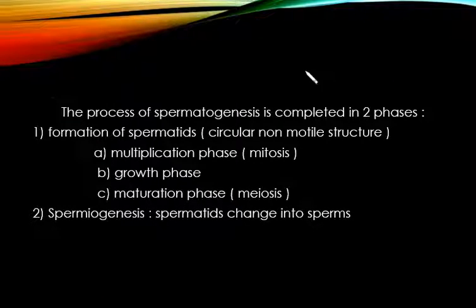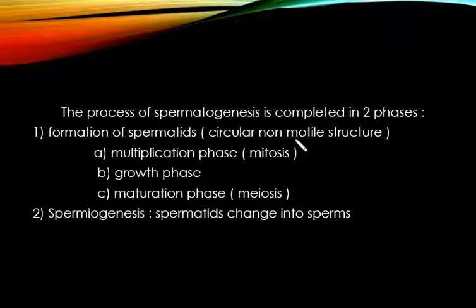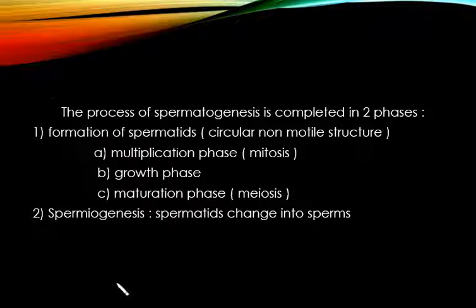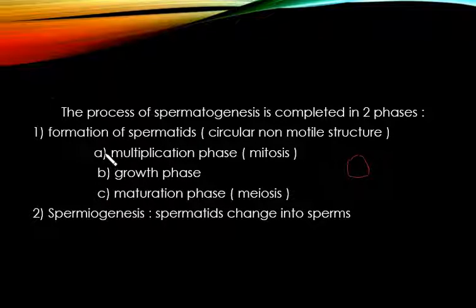Ab yeh jo process hai, woh do phases mein complete hoti hai. First phase mein aata hai spermatids ki formation. Spermatids are nothing but circular non-motile structures — yani ki yeh circular shape mein hoti hain aur non-motile hoti hain, matlab yeh move nahin kar sakti. Spermatids ki formation teen phases mein hoti hai: first is multiplication phase, second is growth phase, and the third one is maturation phase.